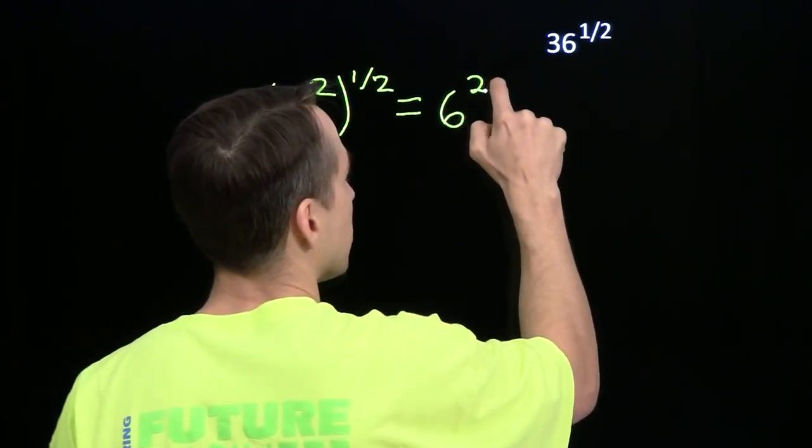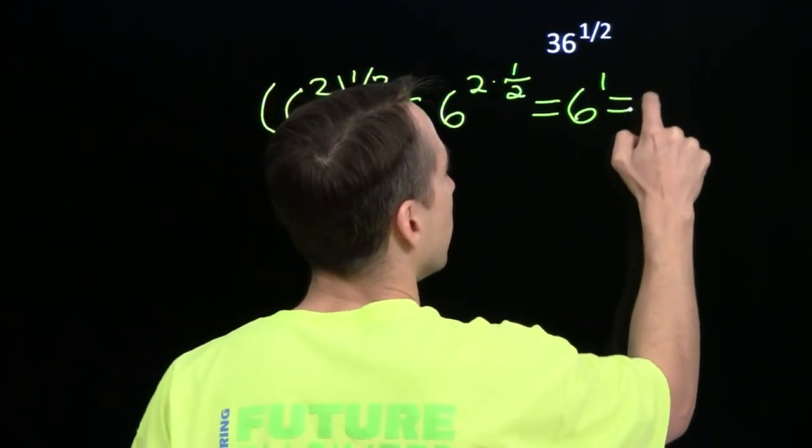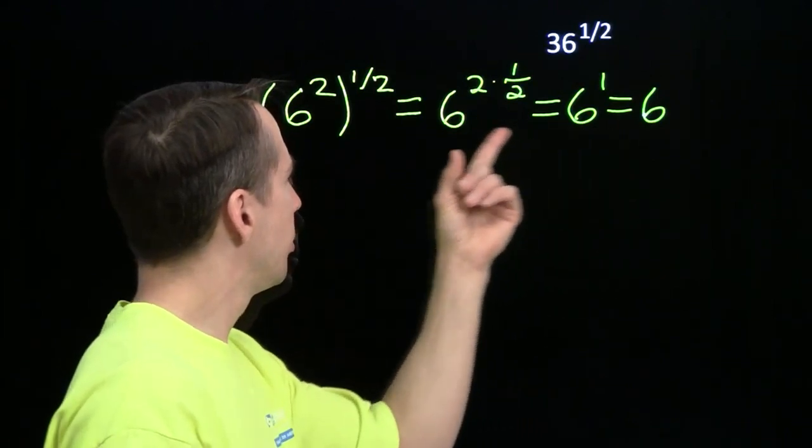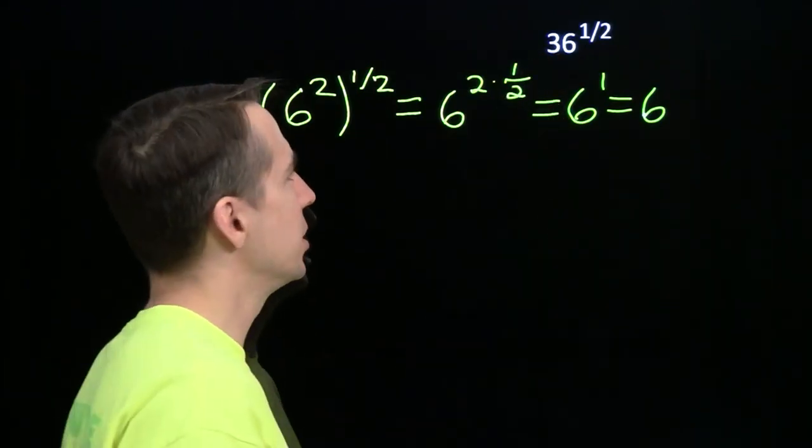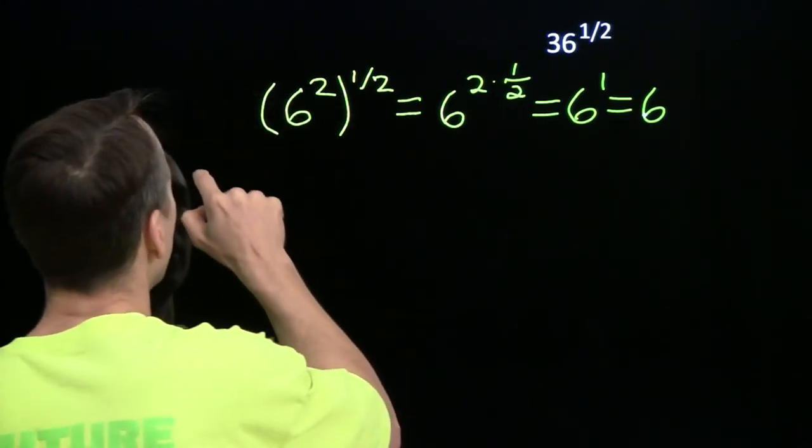We'll get 6 to the 2 times 1 half. Of course, 2 times 1 half is just 1. So our final answer here is 6. But 6 is the number that we squared to get 36. Maybe that's a coincidence. Let's try another one.